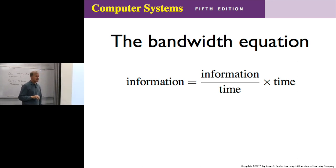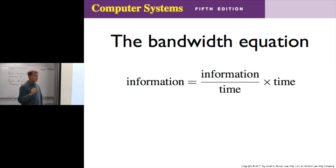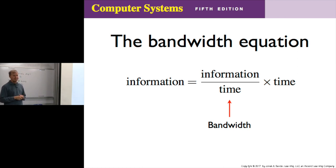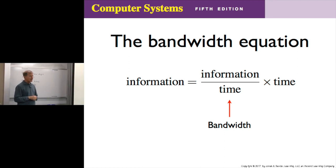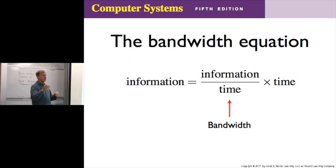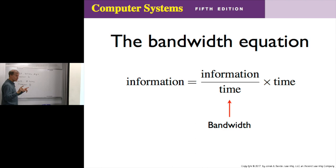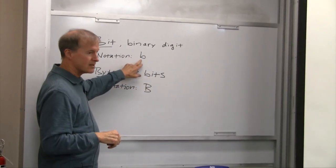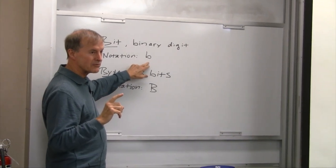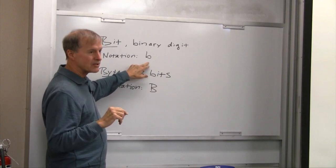When quantifying information flow over a channel, we use a quantity called bandwidth. The bandwidth equation tells us that the amount of information transferred equals information per time times the time. The units cancel out: if information is flowing at so many bits per second, times the number of seconds, that's how many bits get transferred. A bit is the smallest unit of digital information, so bandwidth is typically measured in bits per second.